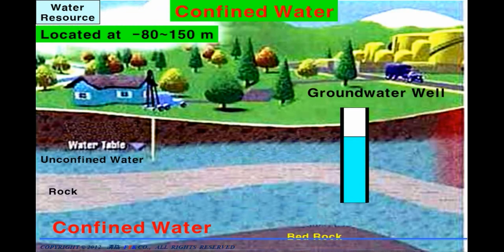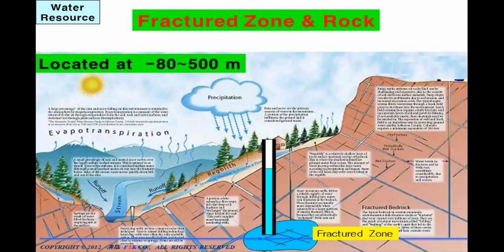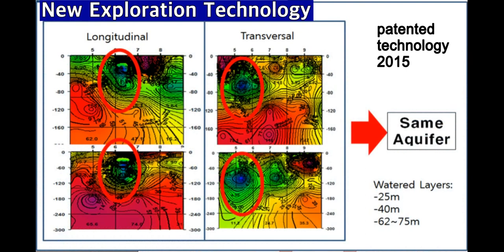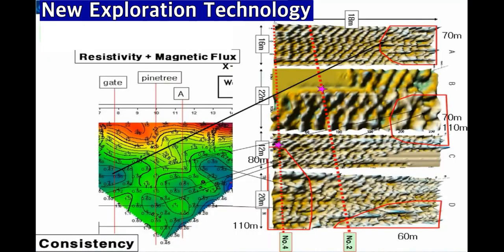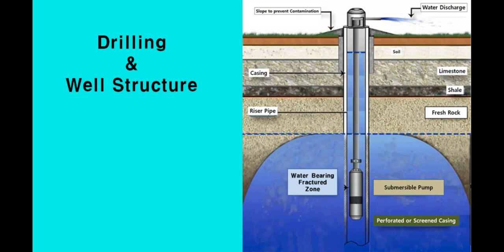We will use the confined and natural bedrock water as the water resource. In general, the natural bedrock water can be stored at the fractured zone located at 80 meters to 500 meters from the surface. Only our team can find this bedrock water in the fractured zone exactly. This is the newly developed technology by Professor Lee, registered as a patent in 2012.